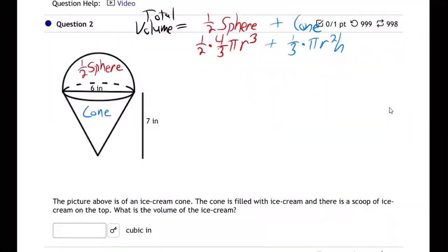So we got our formulas in place. Let's do this. This is going to be a half times four thirds times the pi button. And now the r, what is the r?